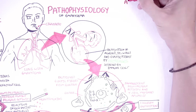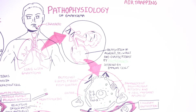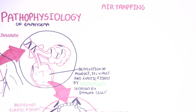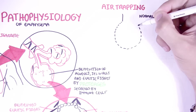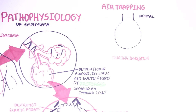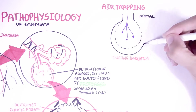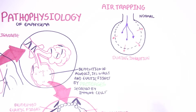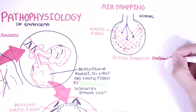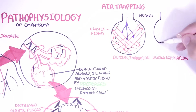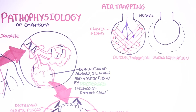Now let's look at air trapping, which occurs a lot in emphysema. Air trapping is essentially when we breathe air in and it becomes trapped, making it very difficult to exhale. To understand the mechanism, we need to look at the normal lungs first. In the normal alveolus, elastic fibers allow the alveolus to expand when we breathe in, and during exhalation the alveolus deflates due to the recoil of the elastic fibers, so air flows out easily.